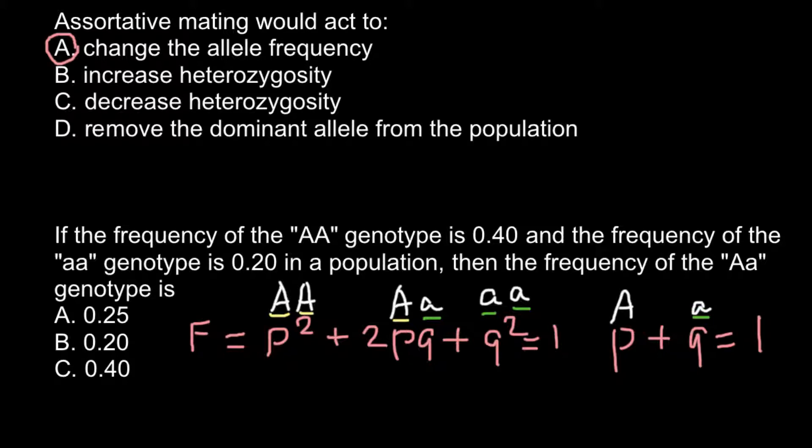So these two alleles, if we add them up, would give us total frequency 1. So if we know the frequency of the homozygous dominant, that is 0.4 according to our problem. If we know the frequency of the homozygous recessive, that is 0.20.